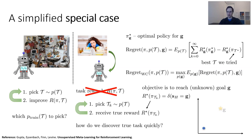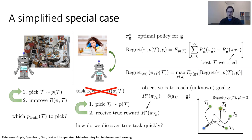If everything is deterministic, the regret is simply the number of attempts needed until you reach the right goal. You can think of this visually: if the unknown goal is here, maybe the first attempt goes here, second attempt here, third attempt here, and the fourth attempt actually reaches the goal — so the regret is 3. In very large state spaces we might never reach the goal perfectly, so we need to reason in a differential sense or consider goal sets. Nonetheless, the deterministic discrete state formulation still gives us a lot of guidance in thinking about what might be a good objective.